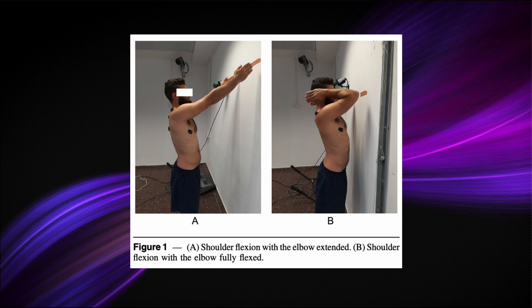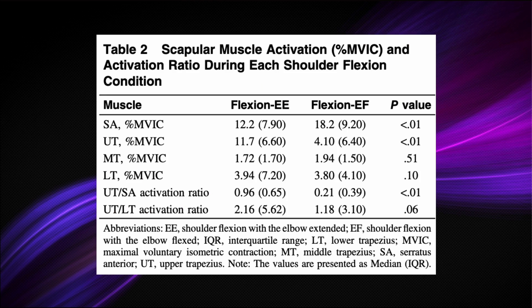What you're seeing here is shoulder flexion up to about 120 degrees — a comparison between that with the elbow fully extended and that with the elbow fully flexed, which is what they investigated in this paper. To quench all the anticipation before we get to the actual exercise, let's look at the results. This is a really well-done table. All the muscles are on the left side, with values expressed as percent MVIC — maximal volitional isometric contraction — for the serratus anterior, upper traps, middle traps, and lower traps, comparing activation with the elbow extended (EE) versus elbow flexed (EF).